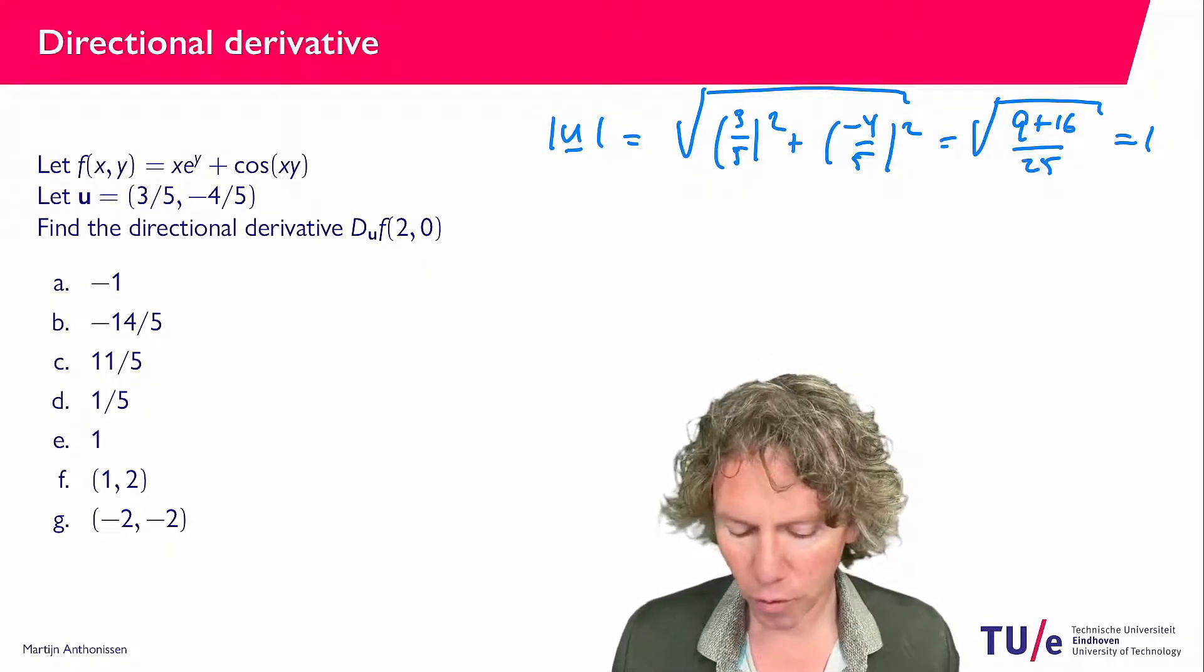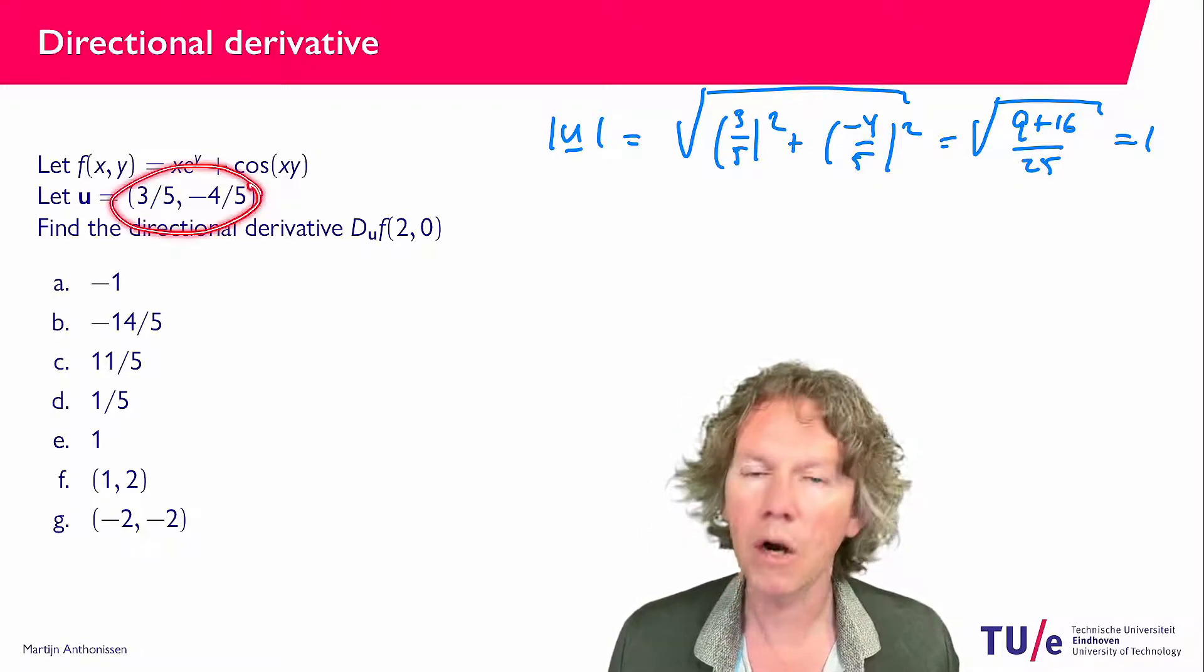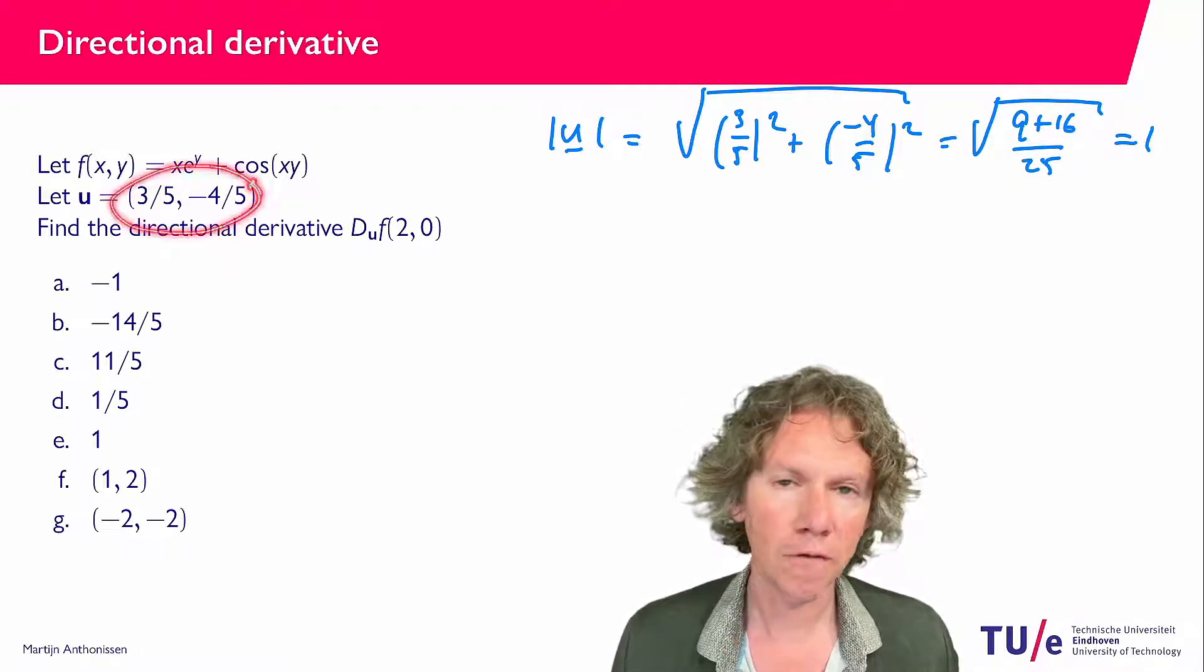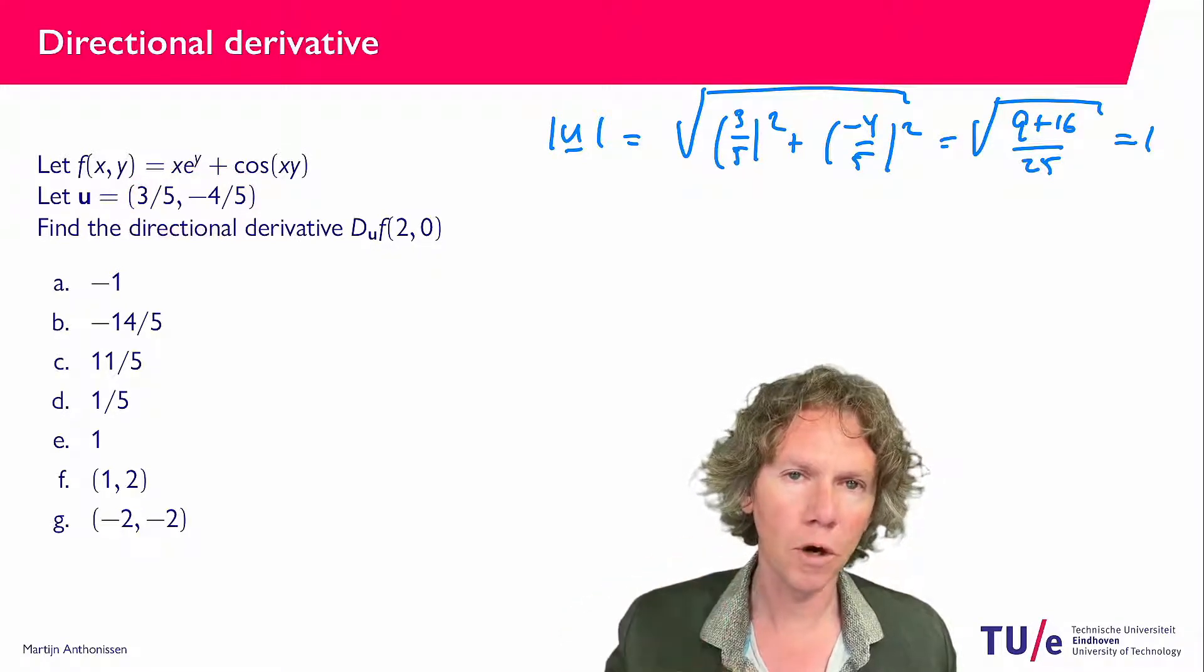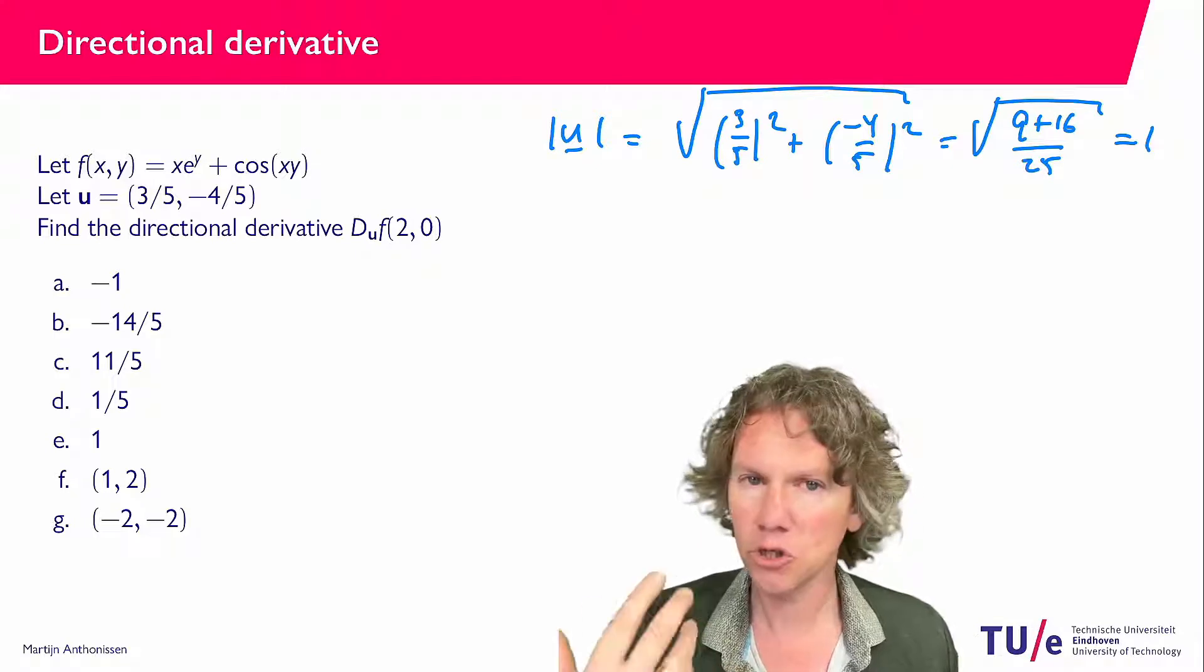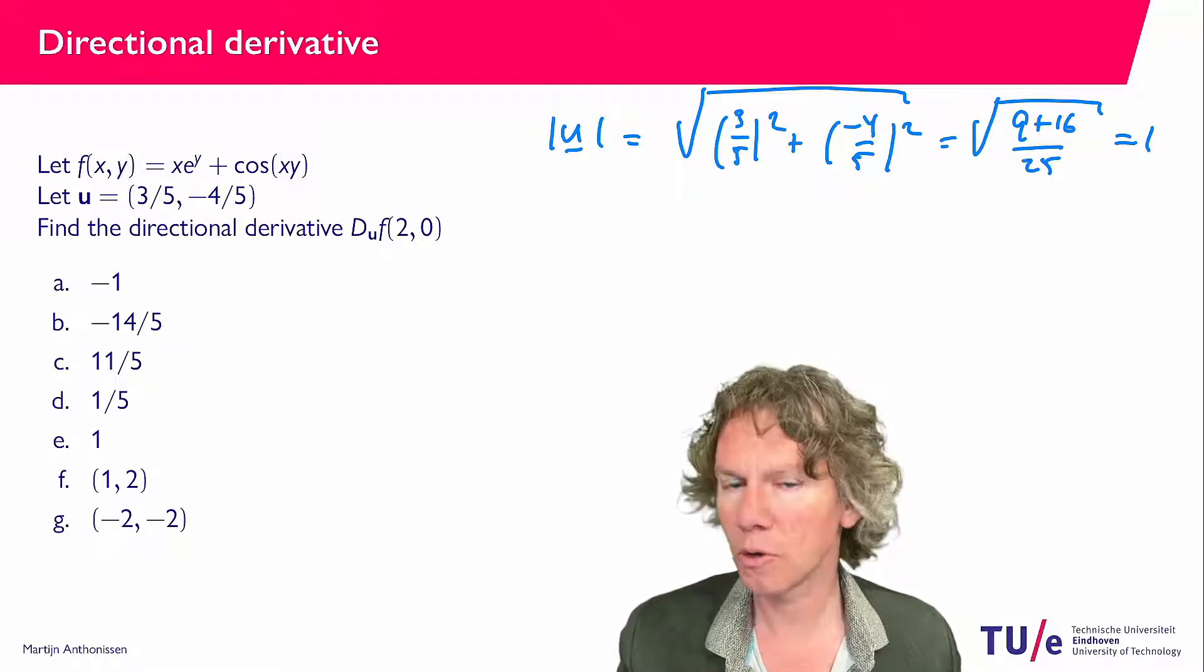If we would pick the vector with components (1,0), then we would have df/dx. If we would have the vector with components (0,1), we would have df/dy, and this generalizes that concept into an arbitrary direction.